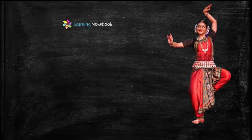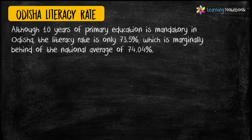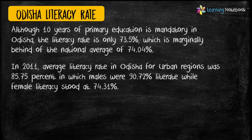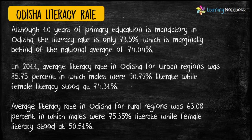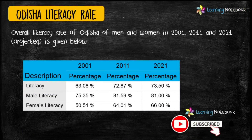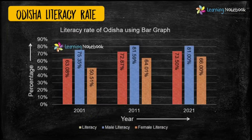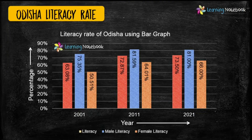Next idea is depicting the literacy rate of Odisha. Here we have used a triple bar graph to show the overall literacy rate of Odisha, as well as the male and female literacy rate.